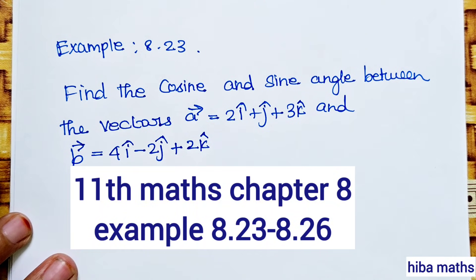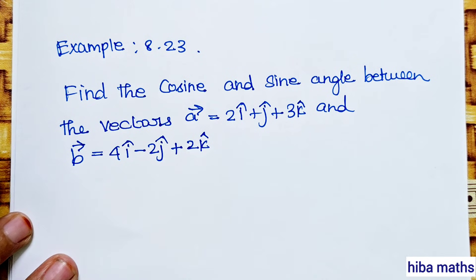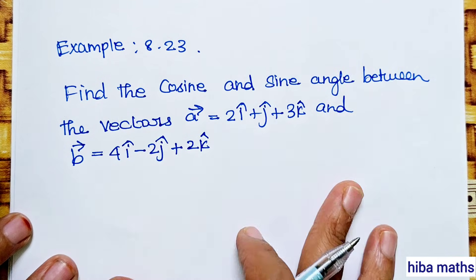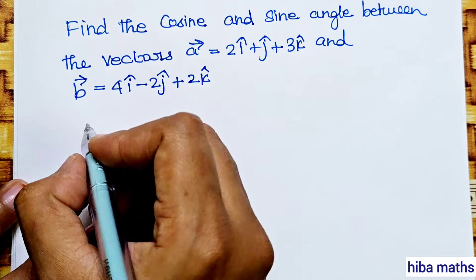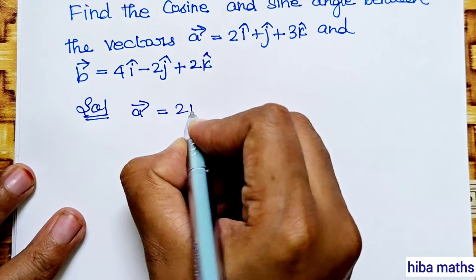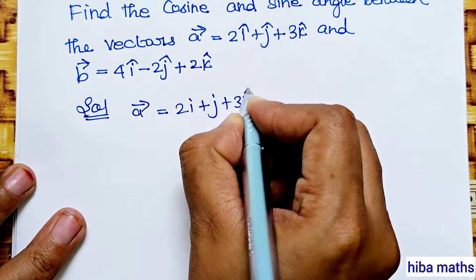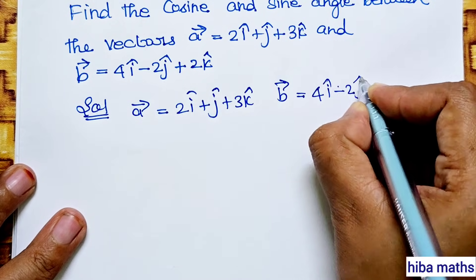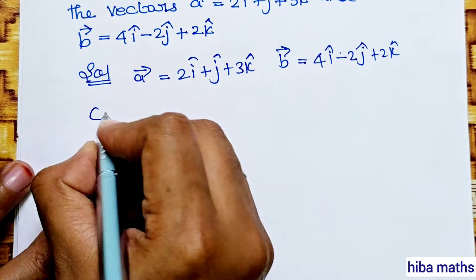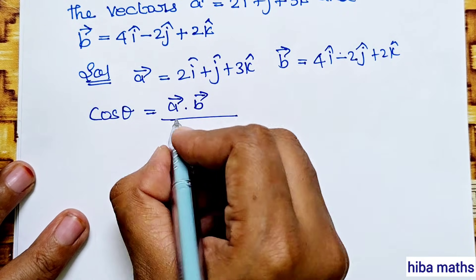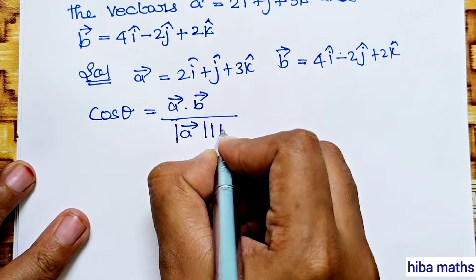Next question, example 8.23. Find the cosine and sine angle between the vectors. A vector is equal to 2i plus j plus 3k and b vector is equal to 4i minus 2j plus 2k. So cos theta is equal to a vector dot b vector divided by modulus of a vector into modulus of b vector.